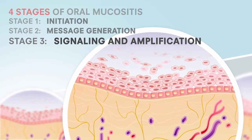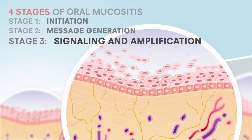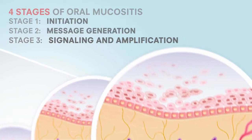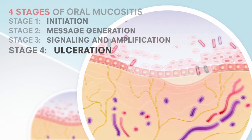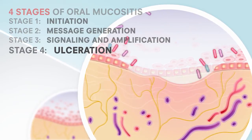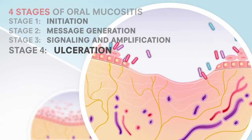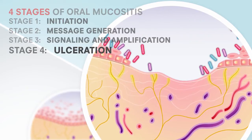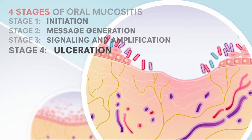The third stage is called signaling and amplification, where mediators from the initial injury lead to additional tissue destruction. During the fourth or final stage, known as ulceration, mouth injuries become clinically evident. Nerves become exposed, pain is often severe, and infection is common, especially oral pharyngeal candidiasis, also known as thrush.